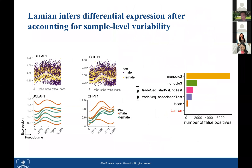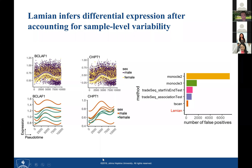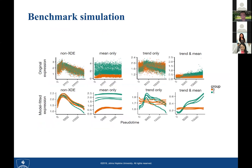Throughout this analysis, we consider both sample-level variability and cell-level variability to avoid false positives. There are sophisticated statistical models behind it with many formulas — the details are in our bioRxiv preprint. By accounting for sample-level variability, you can correctly report results without inflating type 1 errors. In a null dataset where no differential expression is expected, LAMIAN correctly reported zero differential genes, whereas all other methods reported hundreds to thousands of false positives.